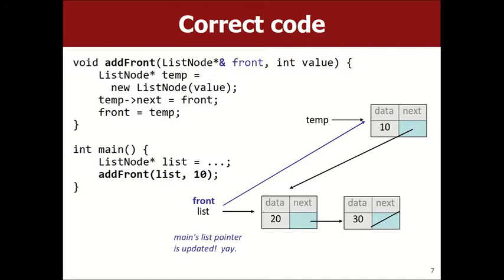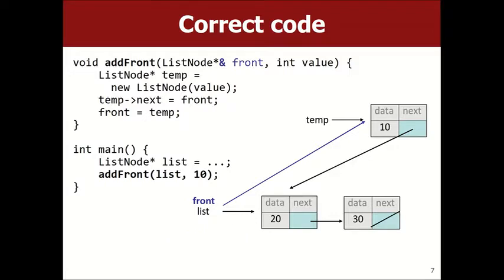Student question: when there was no output on screen, why was it printing nothing? The reason it didn't print was because I had turned off the code that built the list. I thought that if our addFront method worked, I could just use it to build the list. Let me change it so the original list-building code comes back — so it should print that list now.